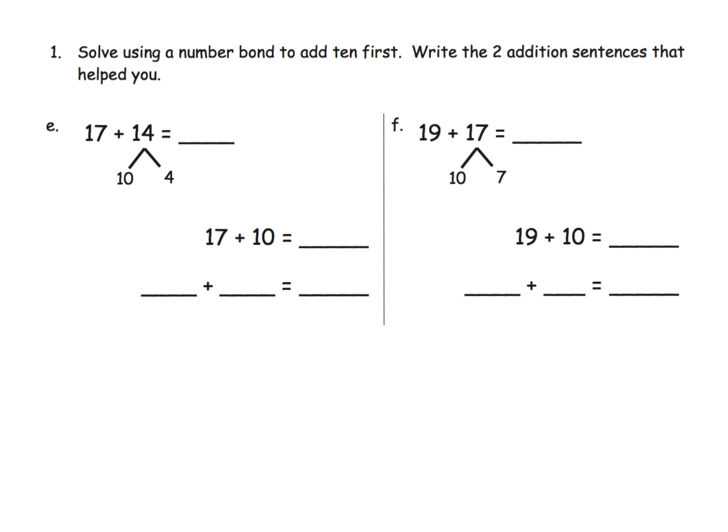So we're going to put this into practice. We're going to start with this one. It says solve using a number bond and add a 10 first. So here we've decomposed the 14 to be 10 and 4. And now we're going to add that 17 and 10 and that's where we're going to get 27. And then we're going to take that 27 and add in the final 4 that we've left off, and 27 plus 4 gives us 31.